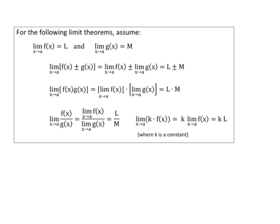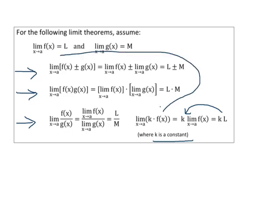Looking at the next page, you can see the rules for addition, subtraction, multiplication, and division. One thing left out was scalar multiplication: if you're multiplying by some constant k, simply pull out the constant and multiply k times that value. So the limit as x approaches a of k times f(x) equals k times L, where L is the limit of f(x).